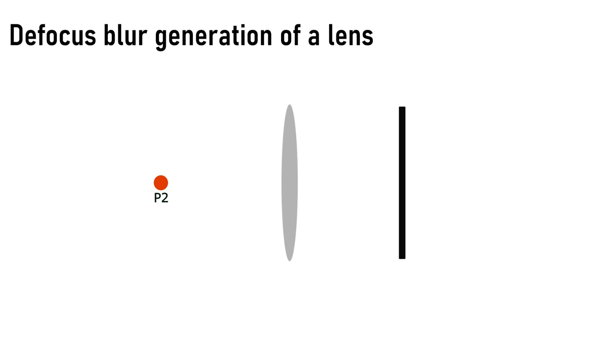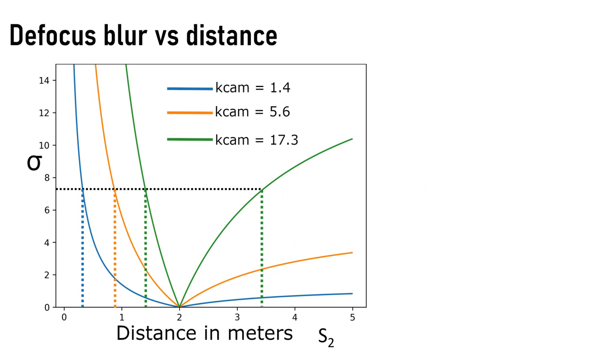If we move this point P1 away from the camera to a new location P2 and do not change anything else in the camera setup, the image of this new point P2 appears not as a point but as a blurred disk on the image plane. The intensity inside this disk behaves according to a 2D Gaussian distribution with standard deviation sigma. The value of sigma varies with the distance to point S2.